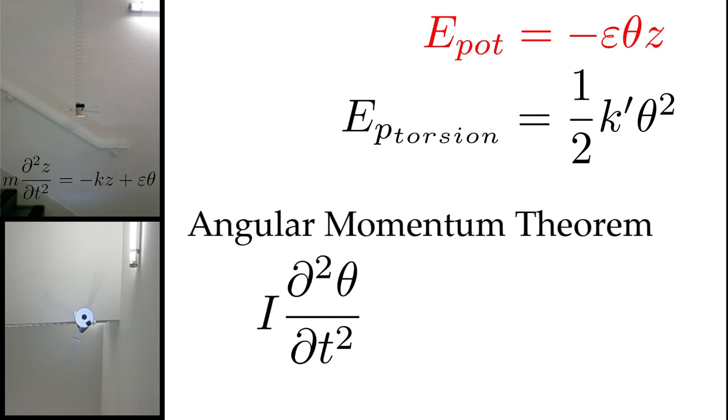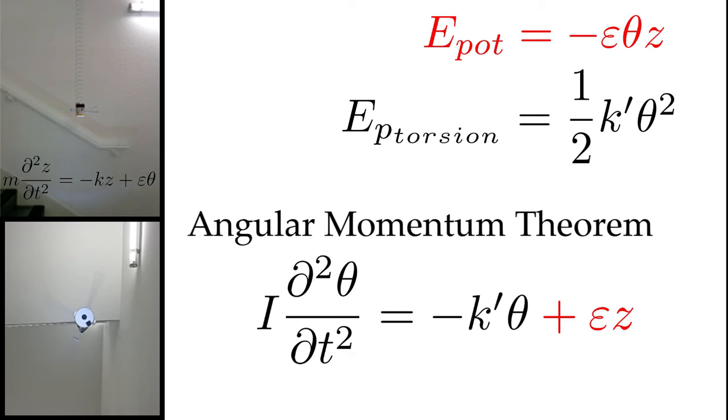The other equation is given by the angular momentum theorem. The moment of inertia times the second derivative of theta equals the torque of the spring, plus the force due to the derivation by theta of the potential energy of coupling.